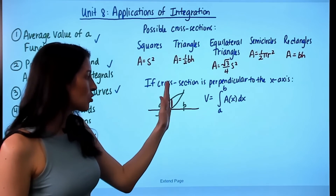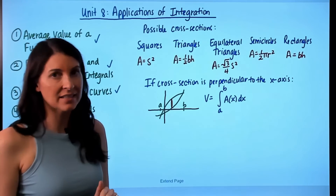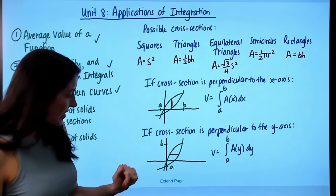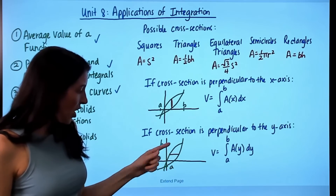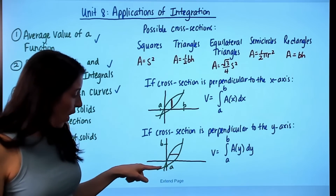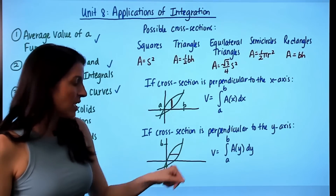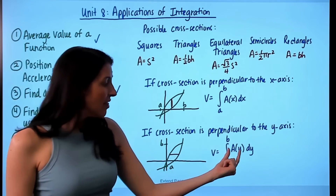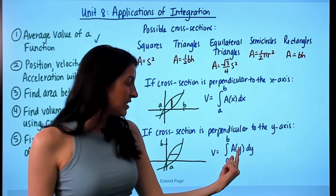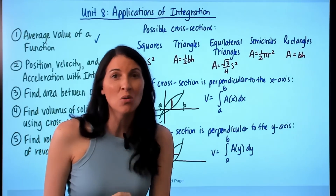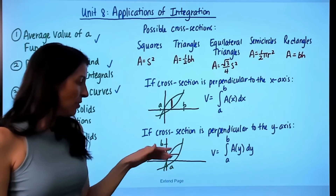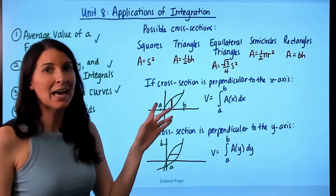Make sure you know those cross-section area formulas. Because cross sections are perpendicular to the x-axis, you write everything in terms of x and integrate dx. If your cross sections are instead perpendicular to the y-axis, use y values of intersection from a to b, and write the area of one cross section in terms of y, integrating dy.